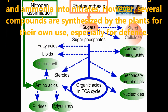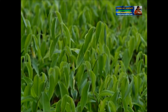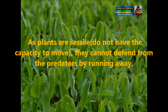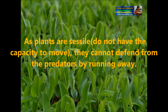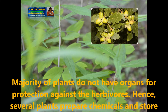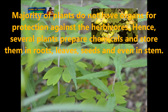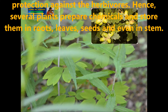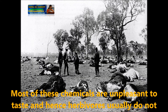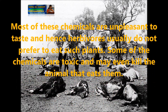Several compounds are synthesized by the plants for their own use, especially for their defense. As plants are sessile — meaning they do not have the capacity to move — they cannot defend from predators by running away. Majority of plants do not have organs for protection against herbivores. Hence, several plants prepare chemicals and store them in their roots, leaves, seeds and even in the stem. Most of these chemicals are unpleasant to taste, and hence the herbivores usually do not prefer to eat such plants.